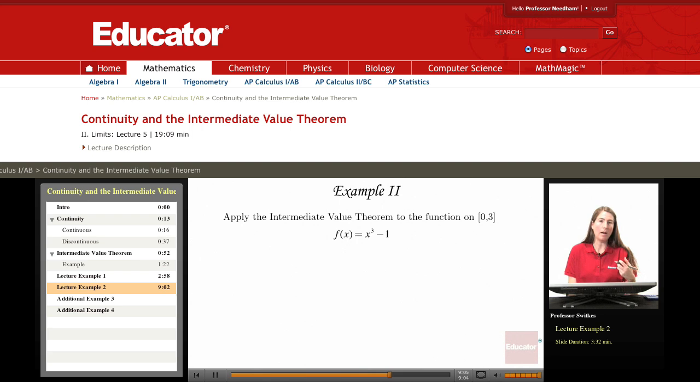I'd like to look at an application of continuity and I'd like to look at the function f(x) equals x cubed minus 1. I'd like to point out that this function is continuous everywhere. All polynomial functions would be continuous everywhere.